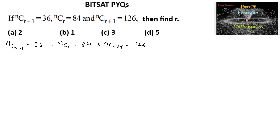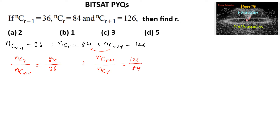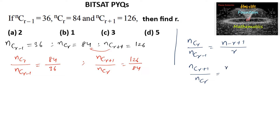We can write N_C_R upon N_C_(R-1) is equal to 84 upon 36, and N_C_(R+1) upon N_C_R is equal to 126 upon 84. Using the property: N_C_R upon N_C_(R-1) equals (N - R + 1) / R, and N_C_(R+1) upon N_C_R equals (N - R) / (R + 1).